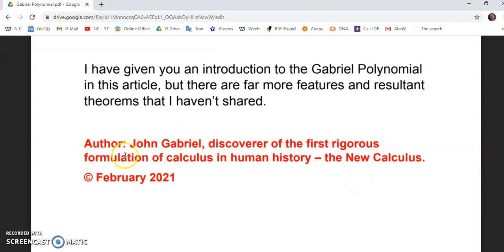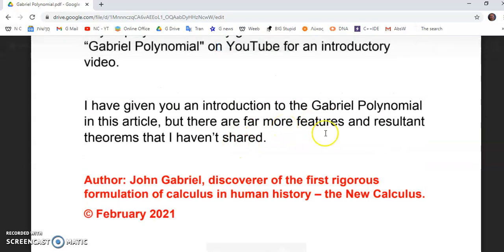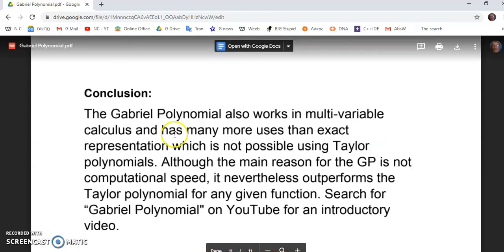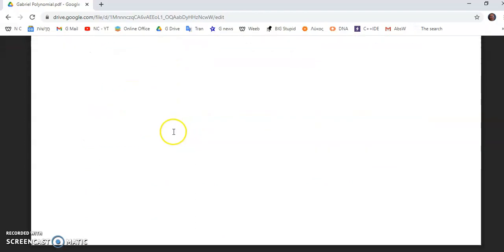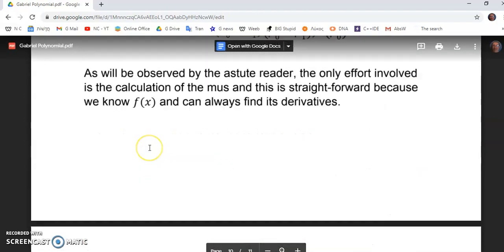I'll place a link to it, and I'll also place a link to an applet that you can play around with to see that it works with every function, and also to compare the speeds at which you can find rational number approximations. Well, actually, in the Gabriel polynomial, they're exact, because there is no error term like you find in Taylor's polynomial. And also, I explain why there is an error term in the interpolation polynomial and Taylor's polynomial.